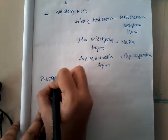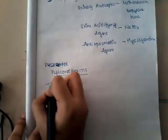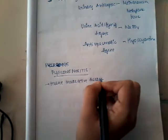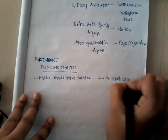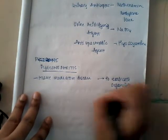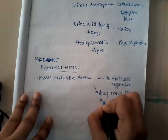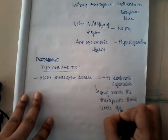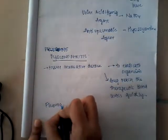Now let us learn about the treatment for pyelonephritis. Pyelonephritis is a tissue-invasive disease, so the treatment regimen should completely eradicate the organism, and the drug should reach therapeutic blood levels quickly. For pyelonephritis, fluoroquinolones are the first-line drug therapy.